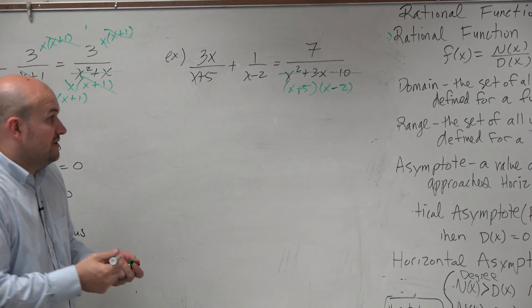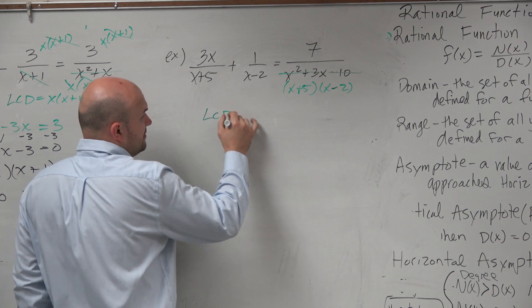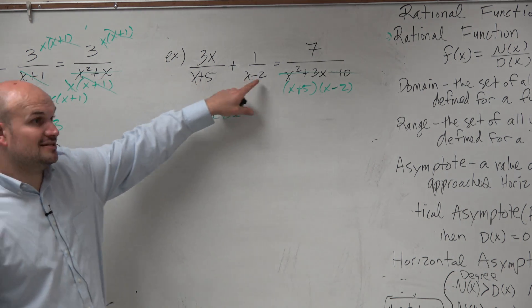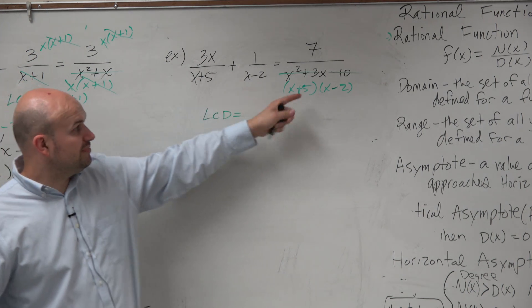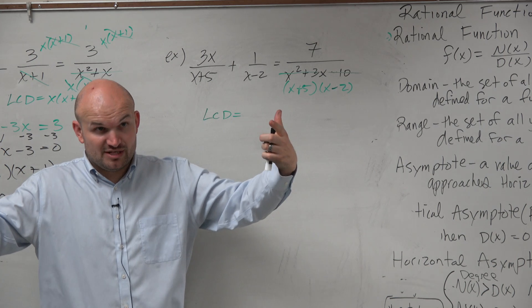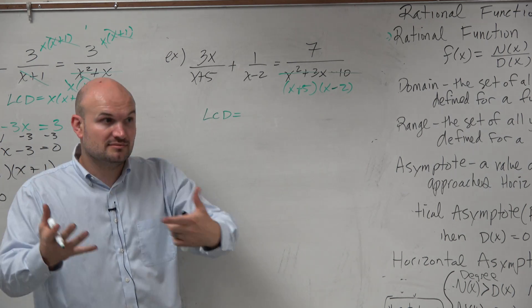But don't you guys agree in our LCD, like whatever we want to call our LCD, it has to contain x plus 5, and it has to contain x minus 2. But if we look over here, that's just duplicates. So to find our LCD, can't we just multiply them and say that's our LCD? Yes.